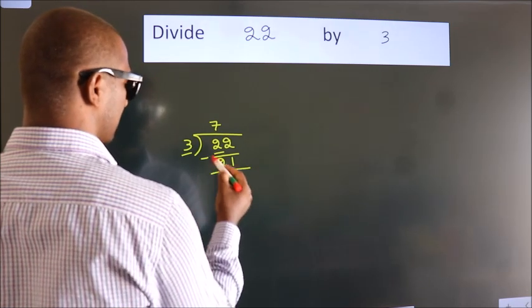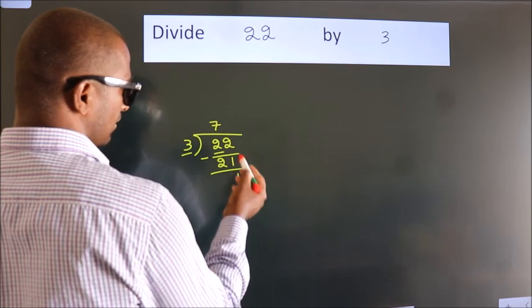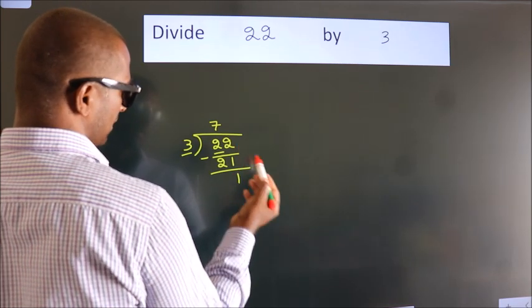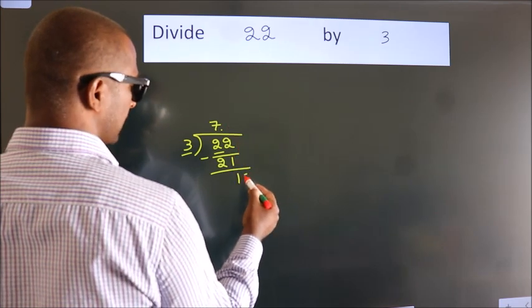Now, we should subtract. We get 1. After this, no more numbers to bring down. So what we do is, we put a dot and take 0.